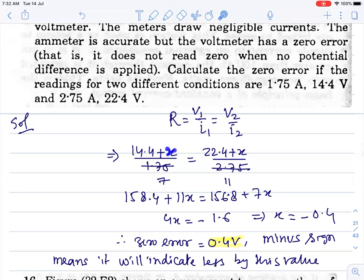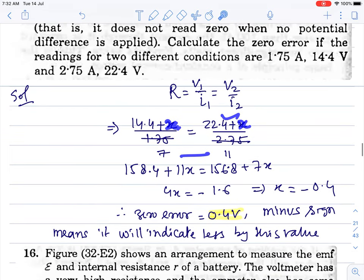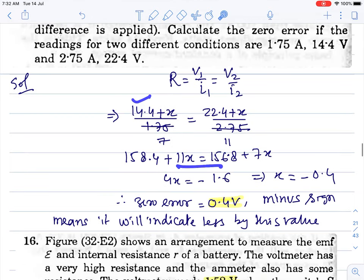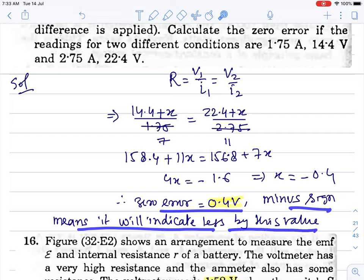We assumed x as the error. X will be read in both cases, either plus x or plus x. Now put the other values - current as it is because it is accurate. After solving, x equals minus 0.4. We assumed it reads more, but actually it reads less. That's why the zero error is 0.4. Minus sign means it will indicate less by this much value.